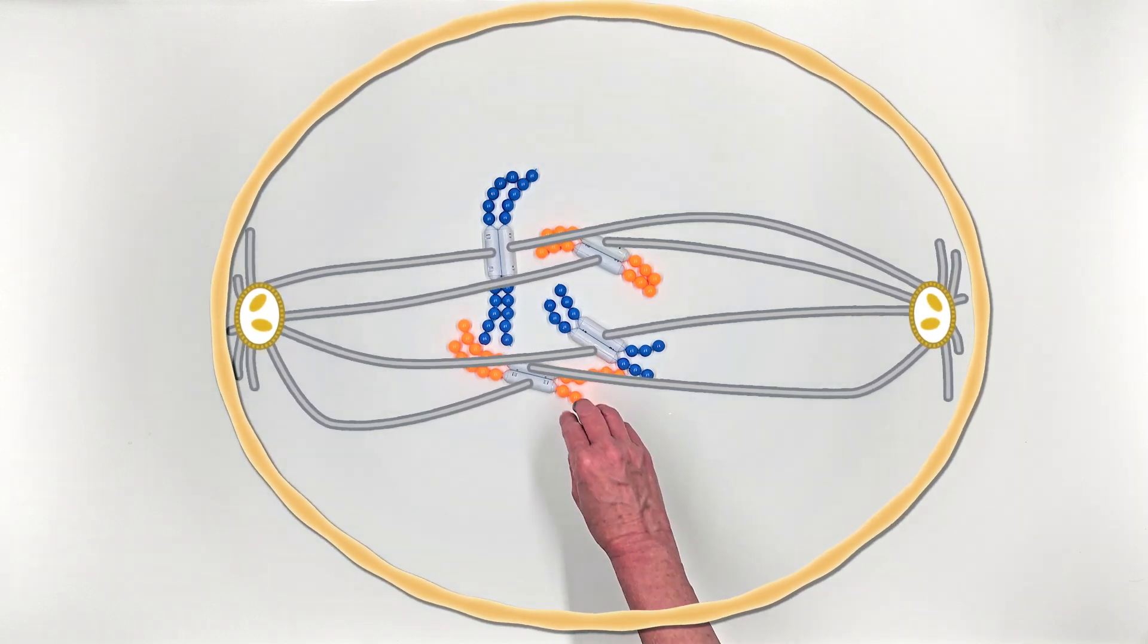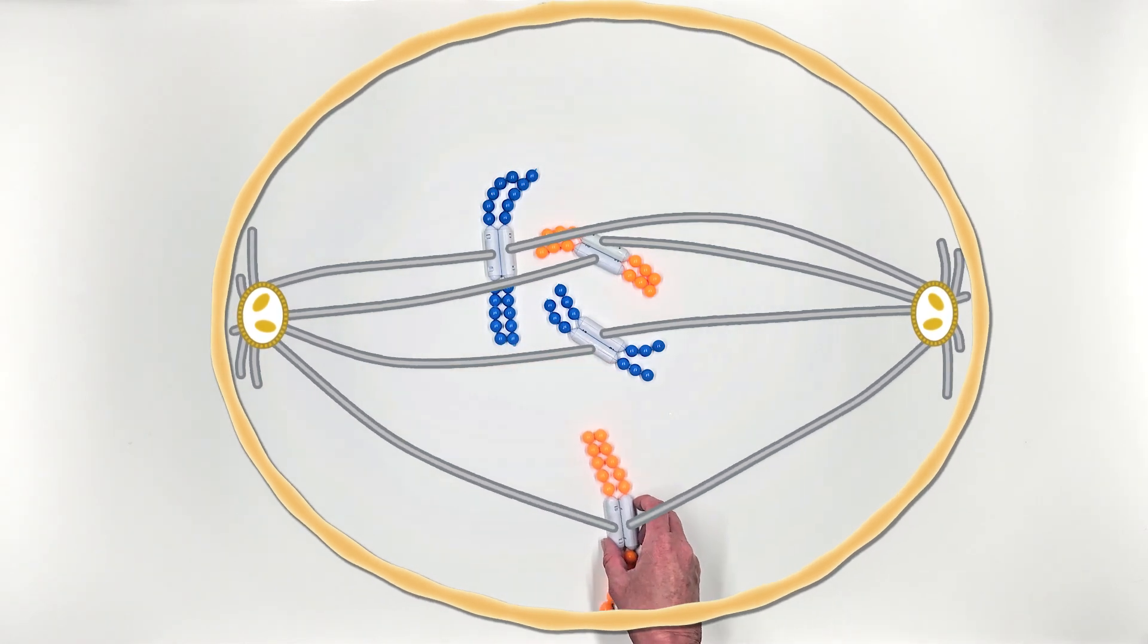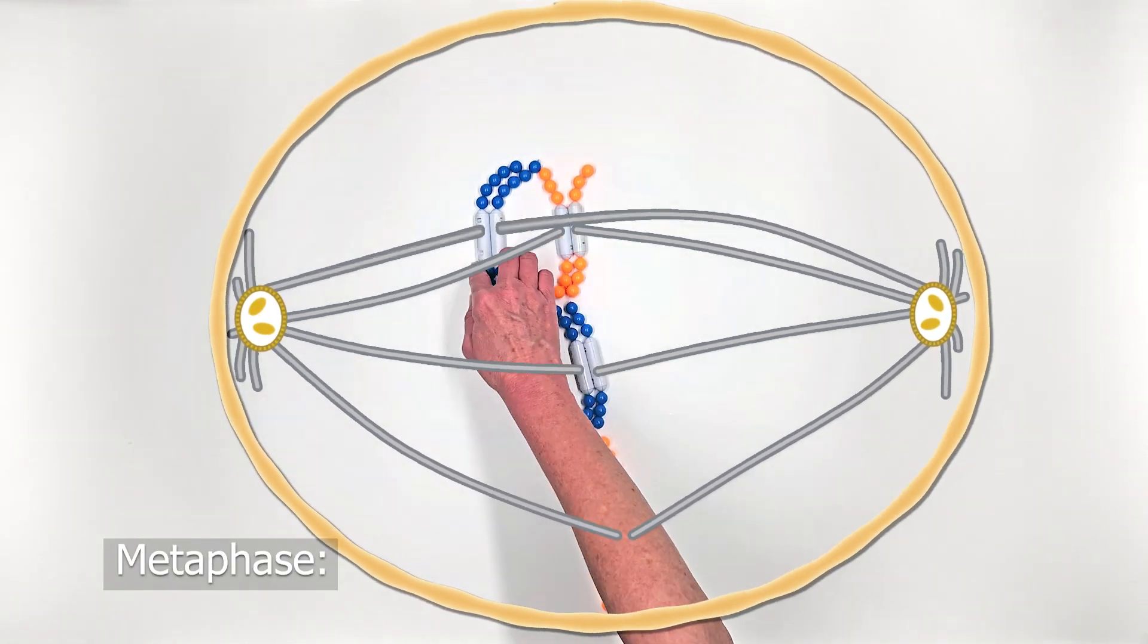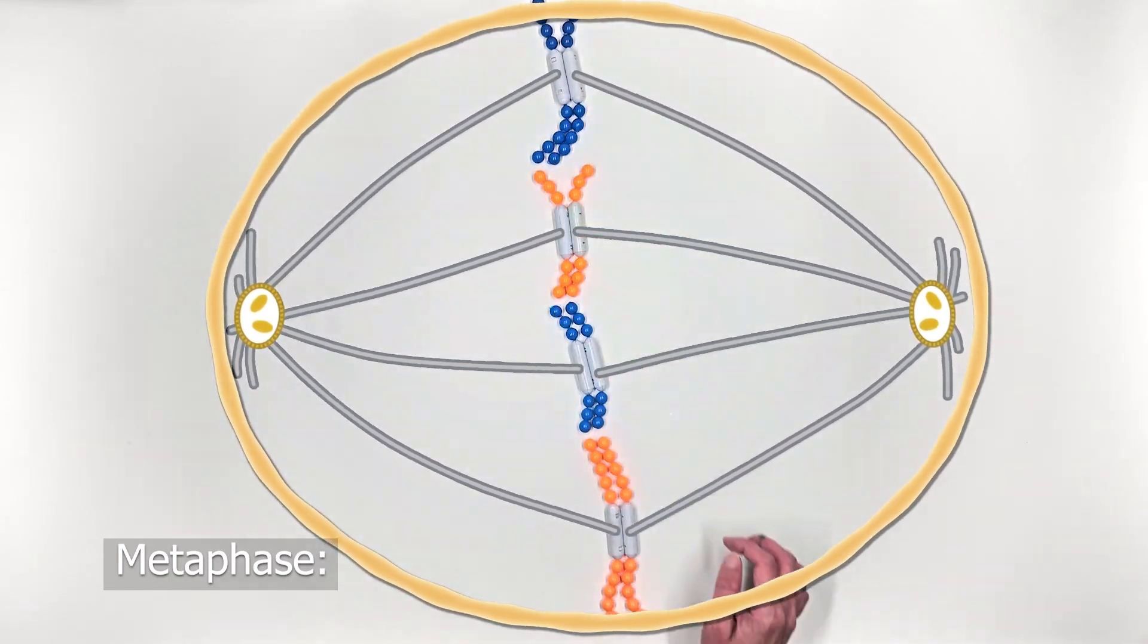In metaphase, we see the chromosomes being moved to the equator, or the middle of the cell, and they are single file.